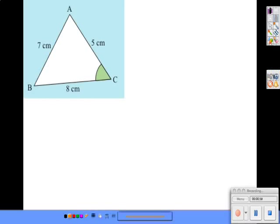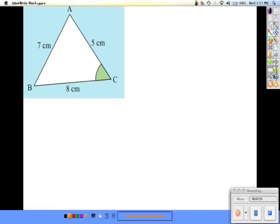So here I want to solve for angle C. Since we have three sides, we're going to have to use the law of cosines. So we start with 7 squared equals 5 squared plus 8 squared minus 2 times 5 times 8 cosine C.